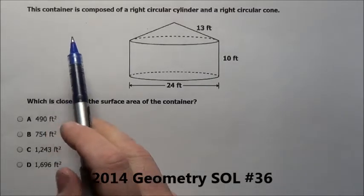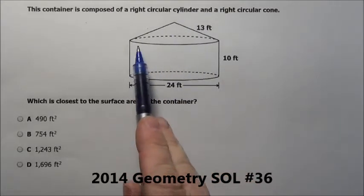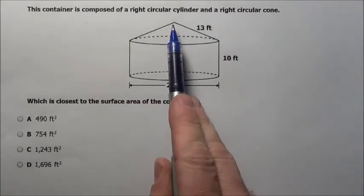Here's problem number 36. It says this container is composed of a right circular cylinder, that's what you have right here on the bottom. It's like part of a Coke can, and a right circular cone.